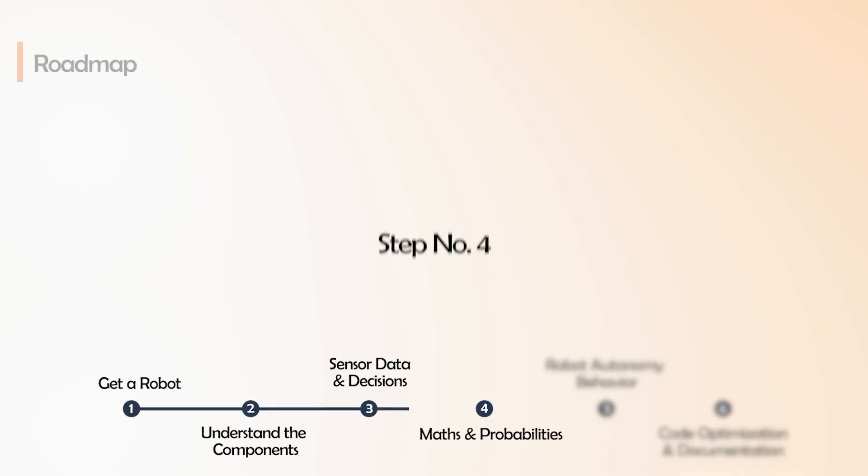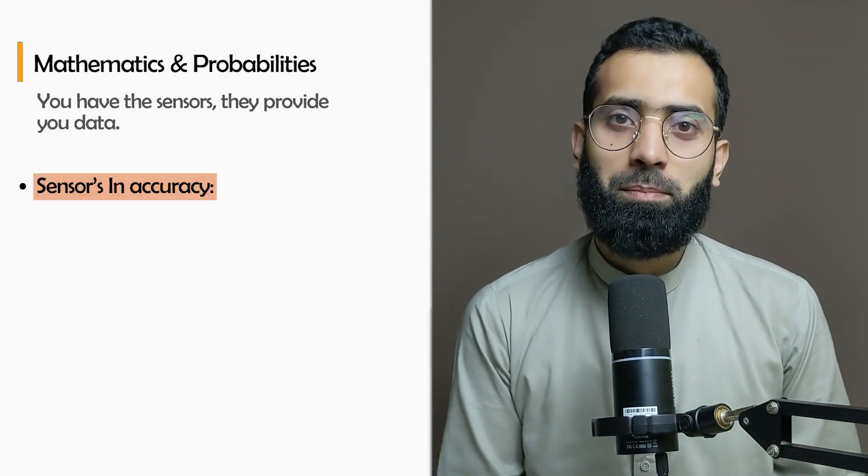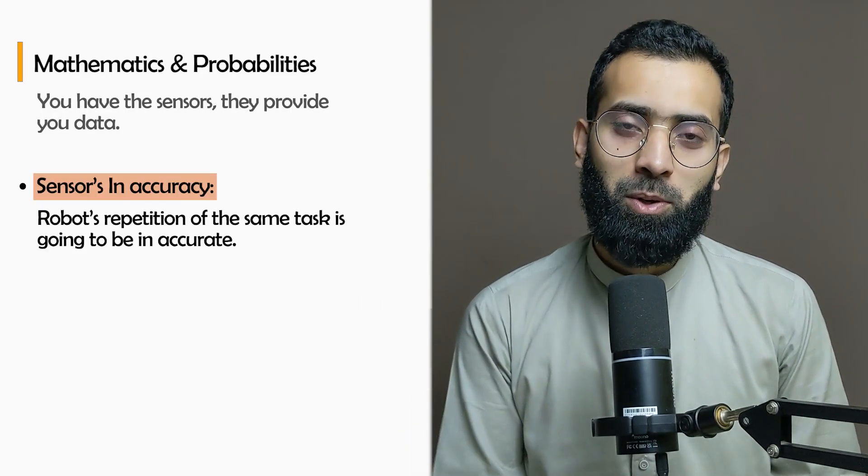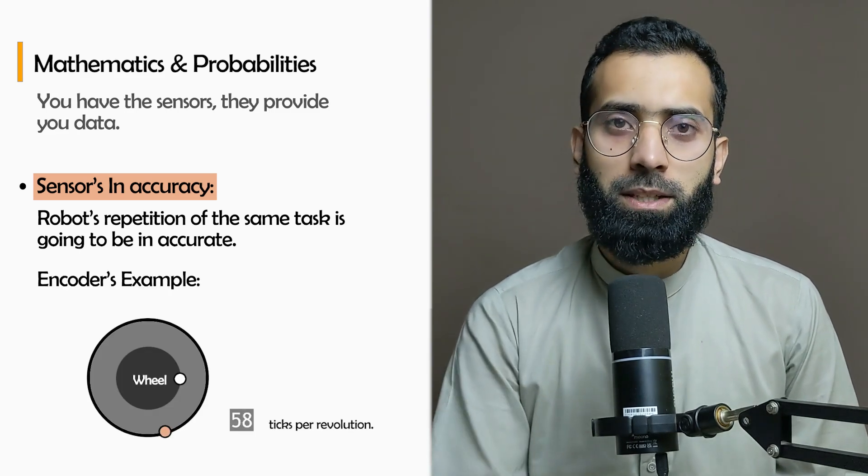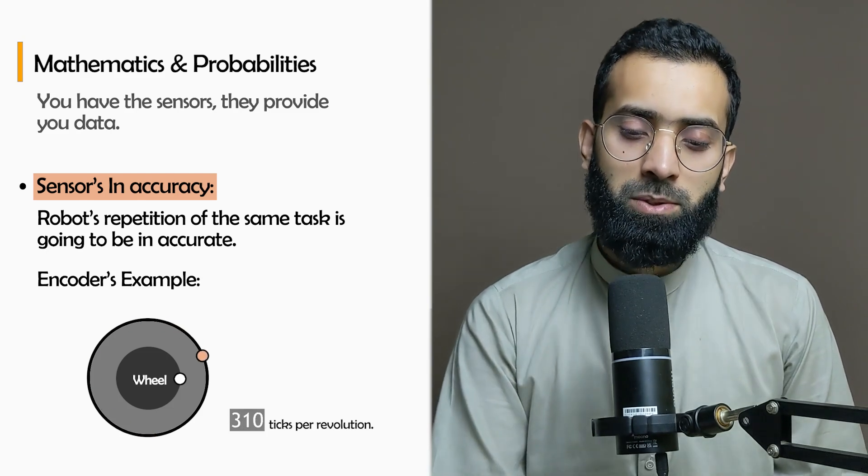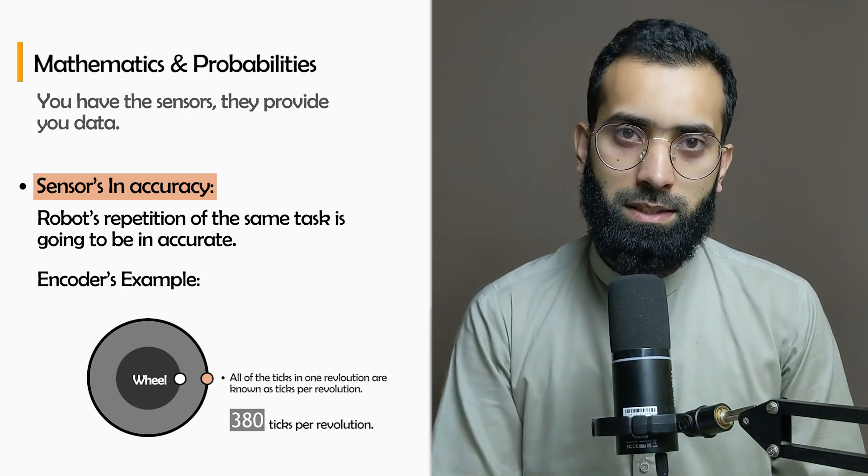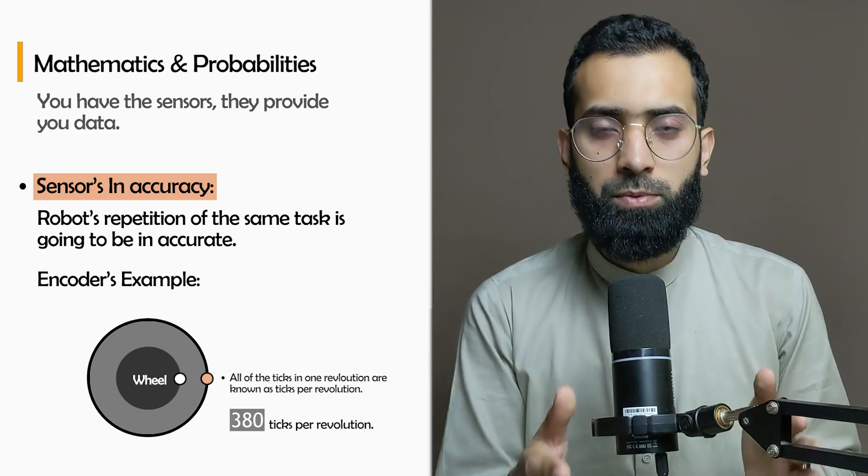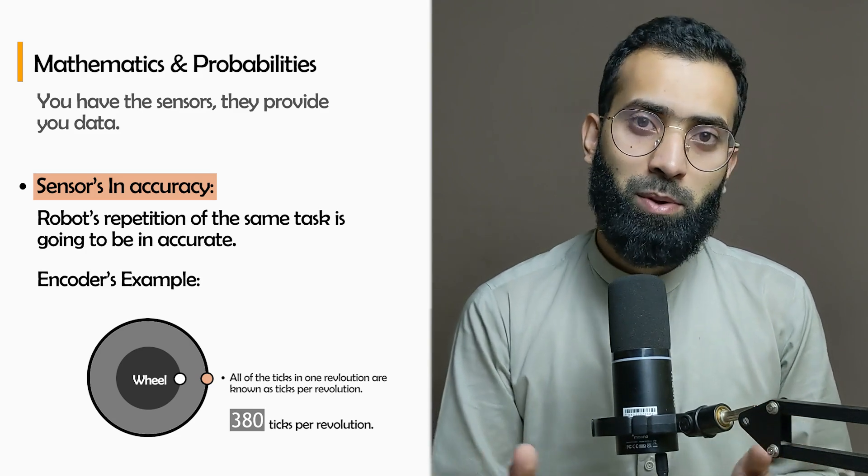Now the next step is mathematics in robotics and probabilities. You have the sensors - they provide you data, but those sensors might not be accurate and the robot's repetition of the same task is going to be inaccurate. For example, an encoder in the robot is going to be giving a very small value per revolution, so it is going to generate inaccuracies. At this point, what you are going to do is improve your output with mathematical equations, statistical behavior, and probabilities for estimating the output from the robot with the error being accumulated over time.